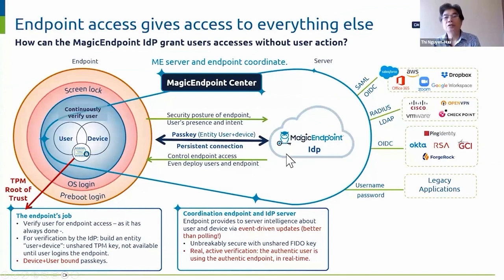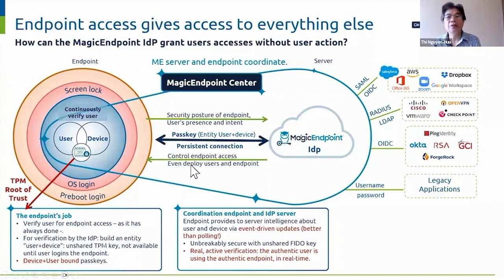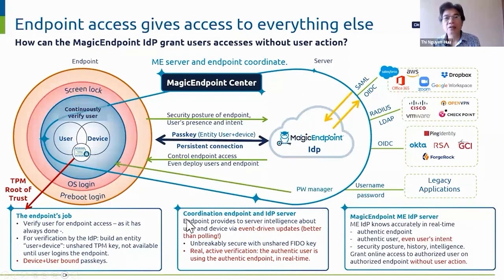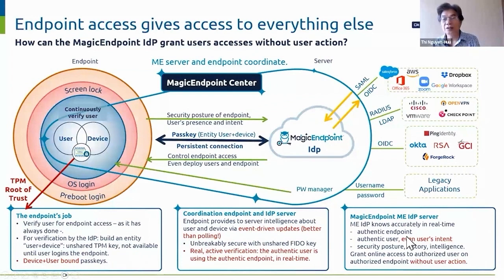So the IDP knows the endpoint very well. The IDP can even control endpoint access — it can be informed that the endpoint has been stolen, so it could tell the endpoint to lock out the user because it's most likely an attacker. By having the persistent connection, the endpoint can inform the IDP in an event-driven way without polling, and that allows the IDP to know everything. Because the IDP knows everything about the endpoint, including the user, when the application provider wants to verify, the IDP can respond without user action.